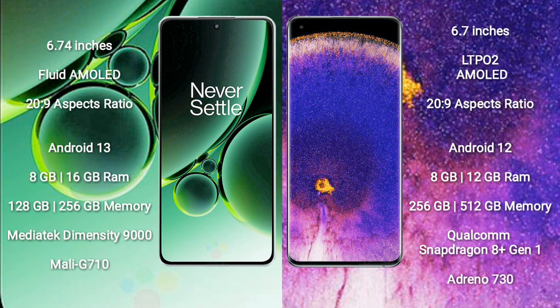OnePlus Nord 3 runs on the Android 13 operating system. Oppo Find X5 Pro runs on the Android 12 operating system.